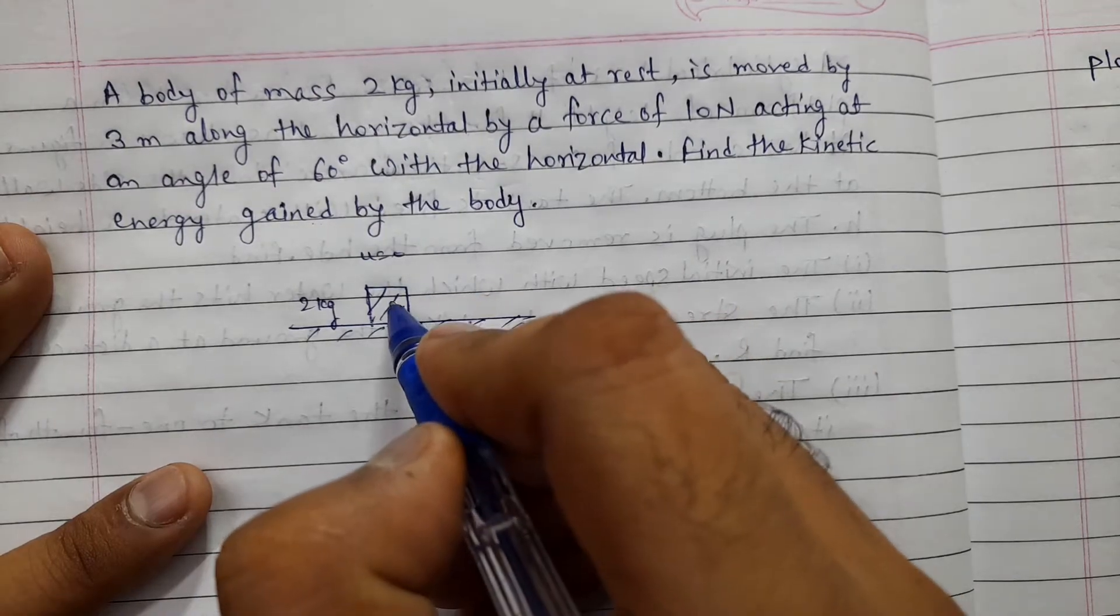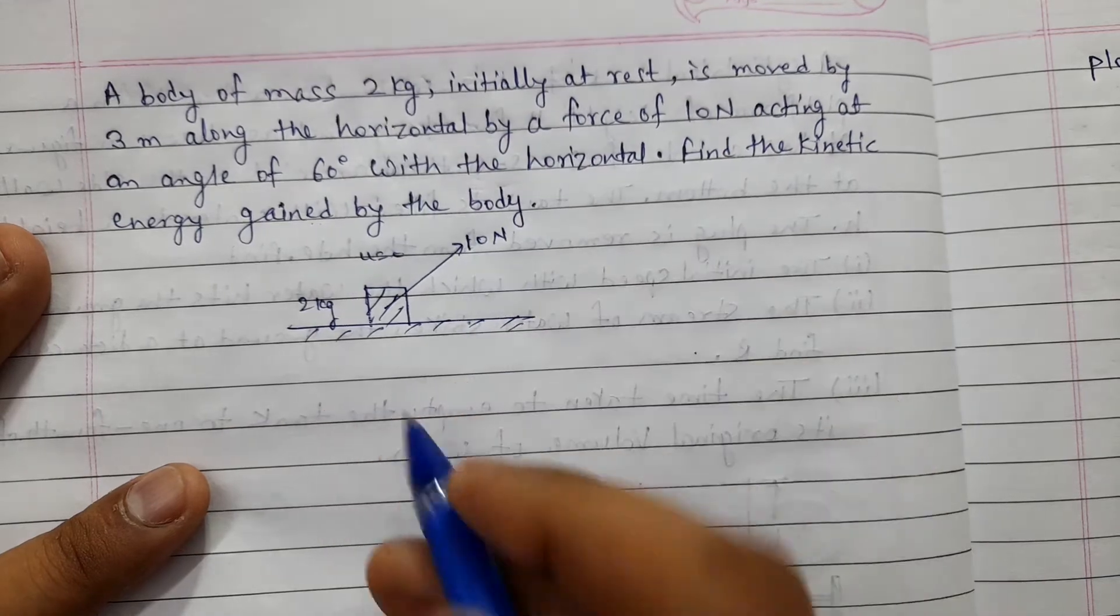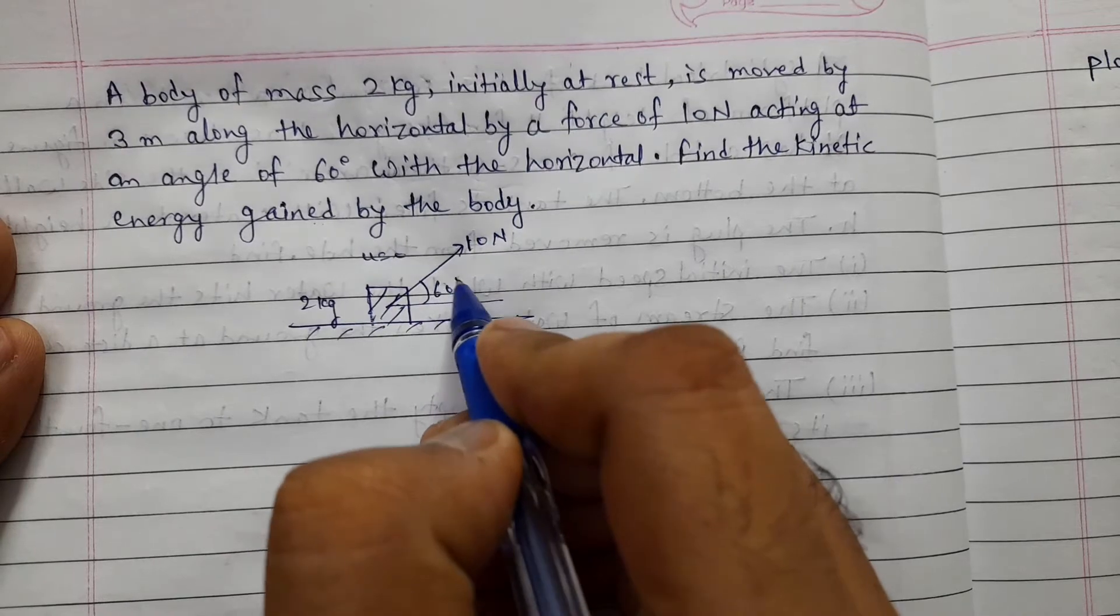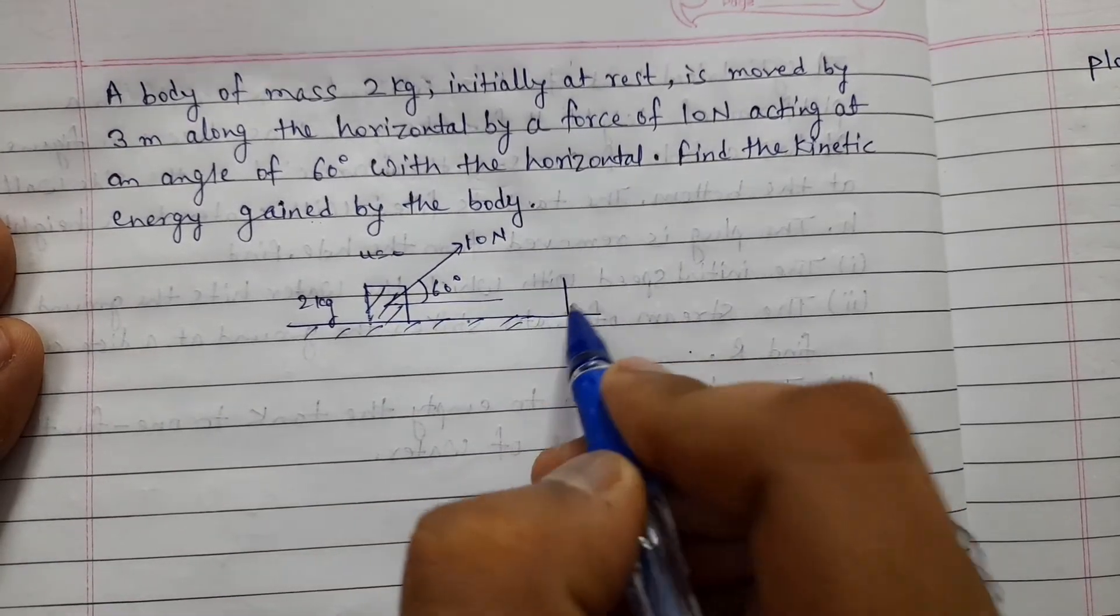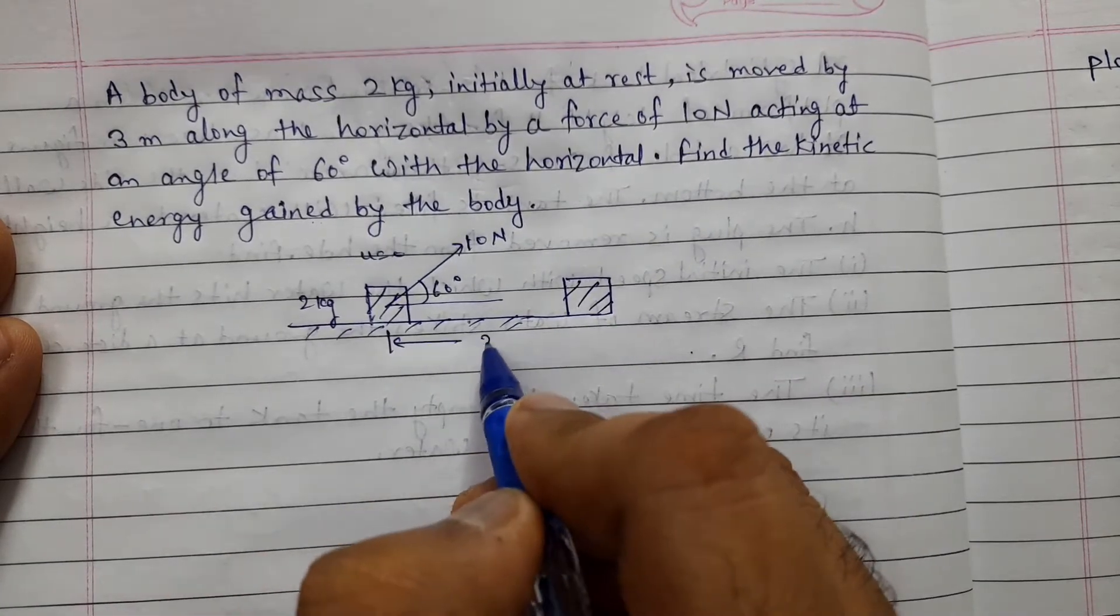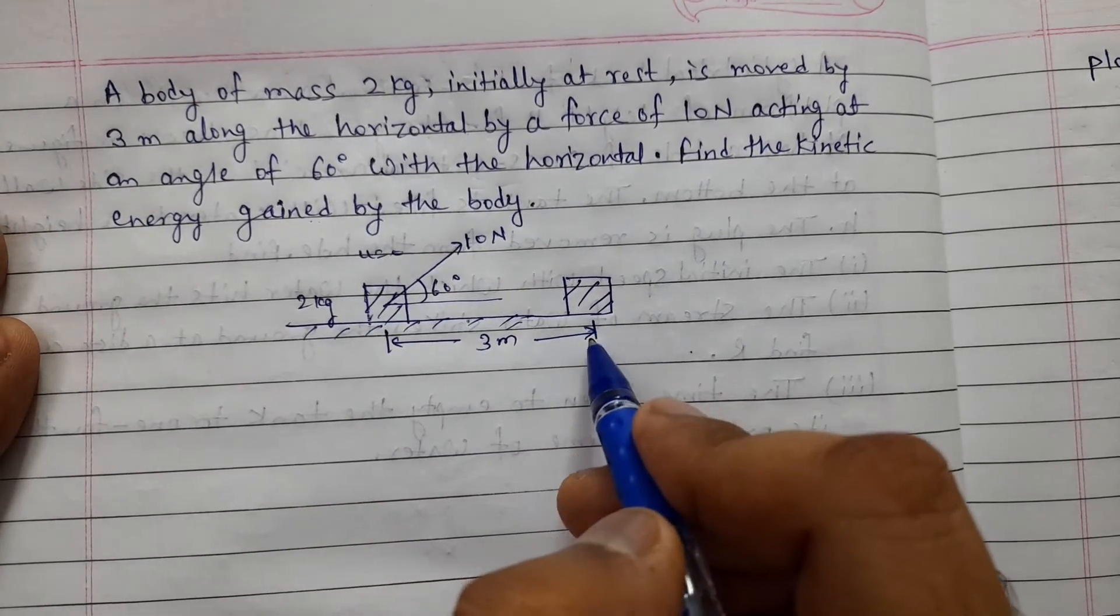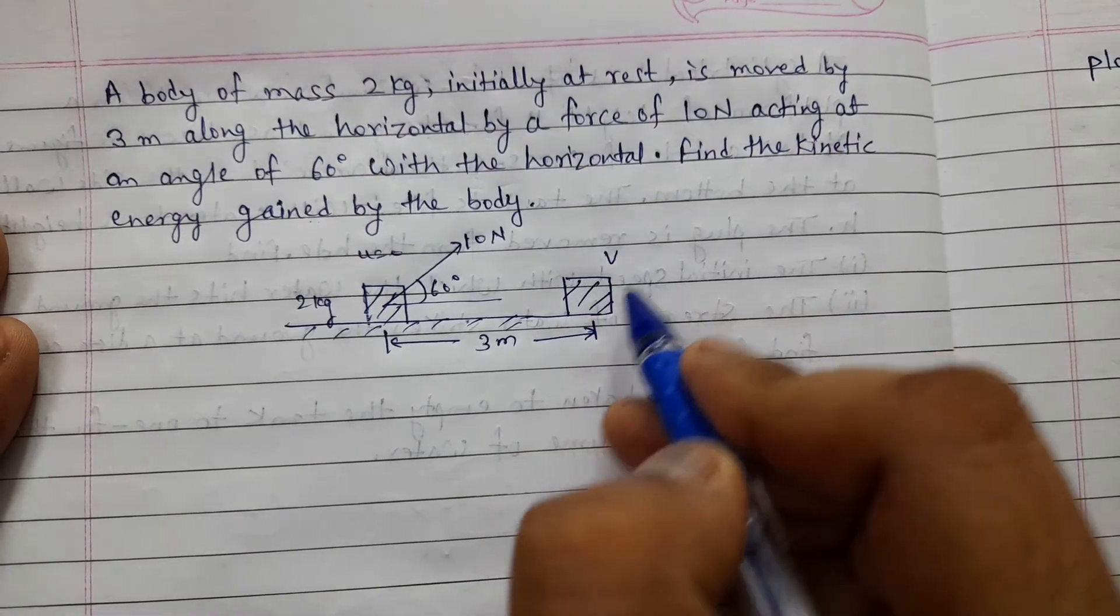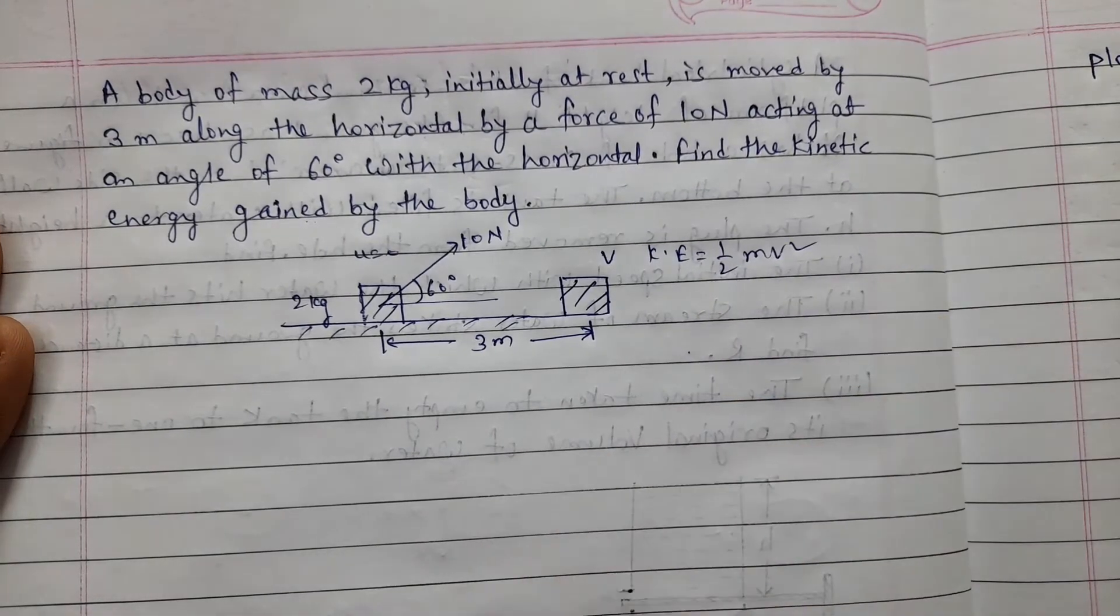What did it do? There is a force of 10 N at an angle of 60 degrees with the horizontal. And this body is displaced 3 m along the way. So, in this position, the kinetic energy must be removed. Let's say this velocity is V. The kinetic energy will be half mv squared. Now let's see.